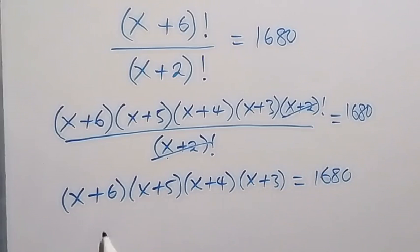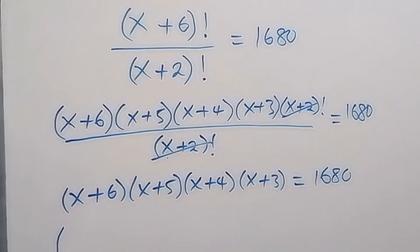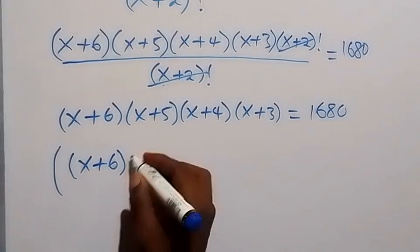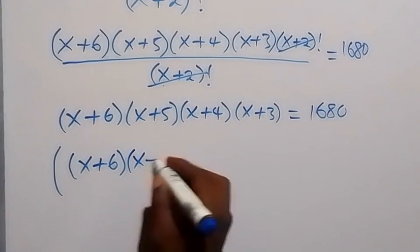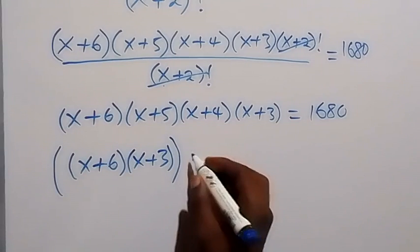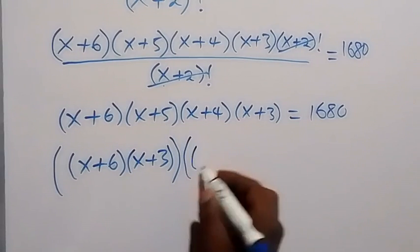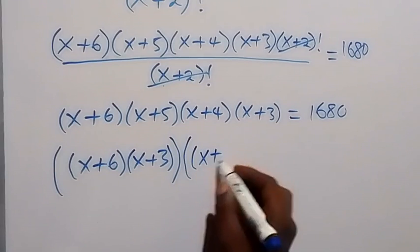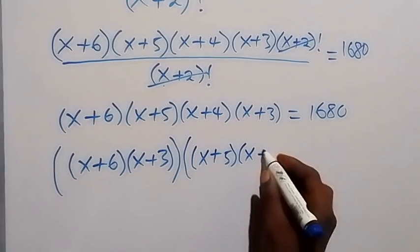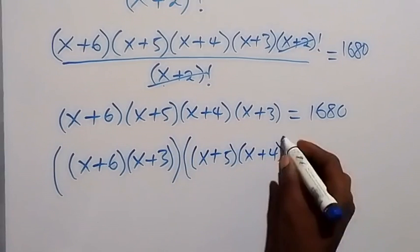Now let's group (x + 6) and (x + 3) together into one bracket, and also group (x + 5) and (x + 4) together into another bracket.